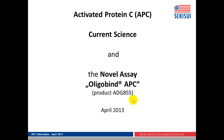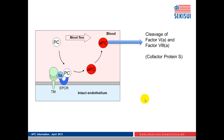It's product number ADG855. This is the first assay to measure the activity of activated protein C in blood samples. This is the background of APC generation and its role in blood coagulation.